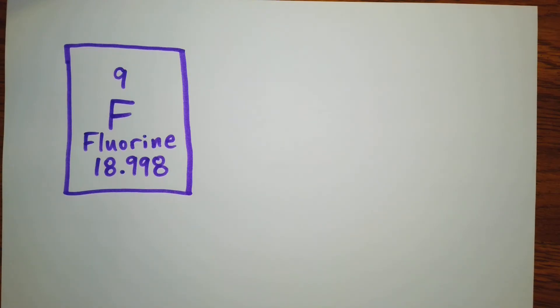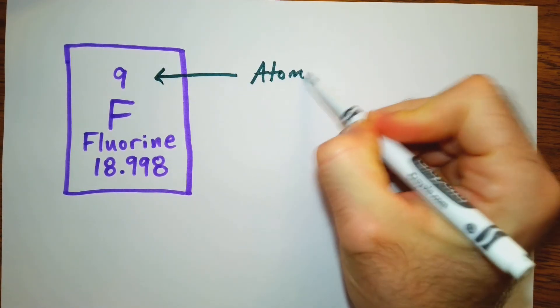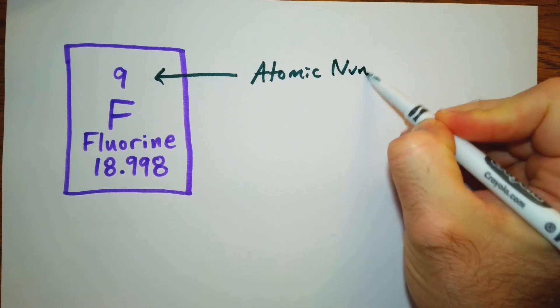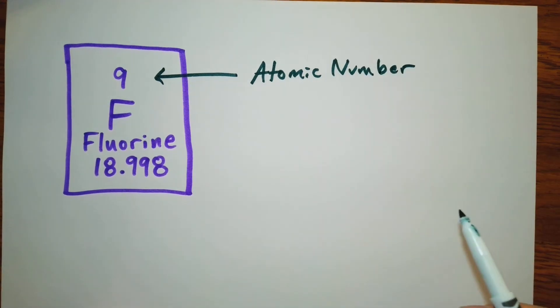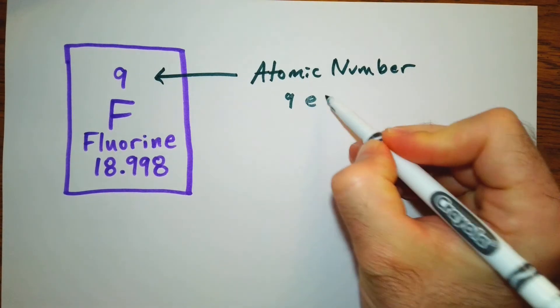This one is fluorine. So we have an atomic number here of 9. So that's our atomic number. And what does that equal? That equals to our number of electrons, and that's also the number of protons. So we have 9 electrons.